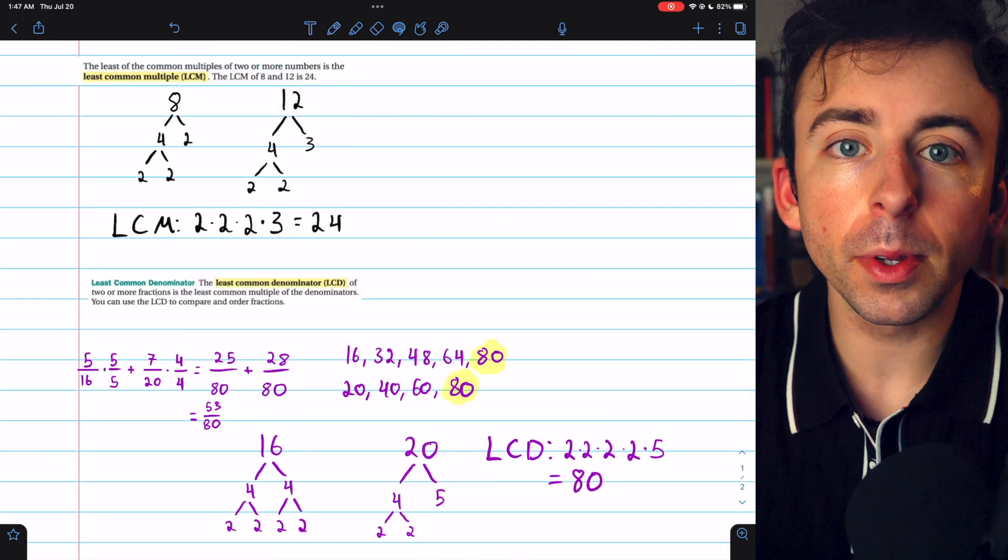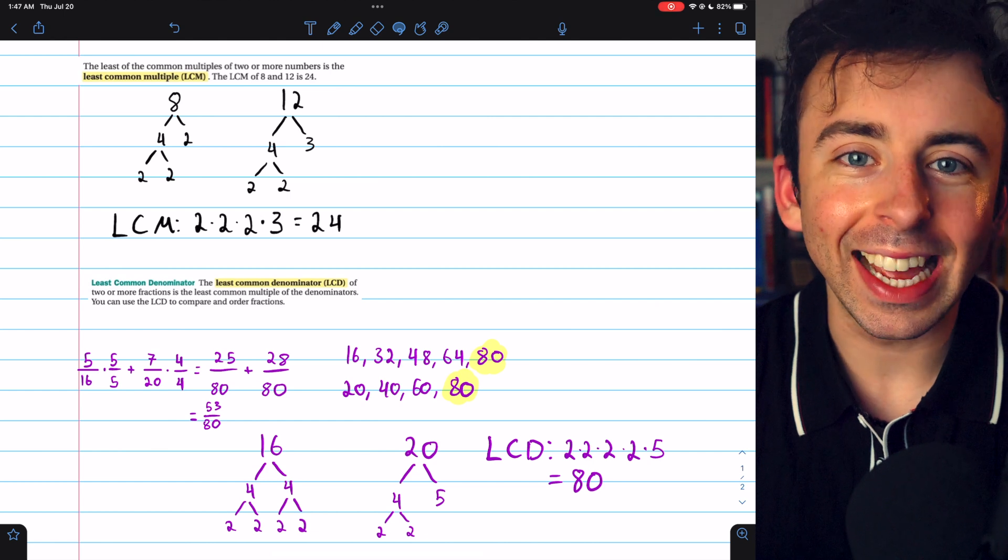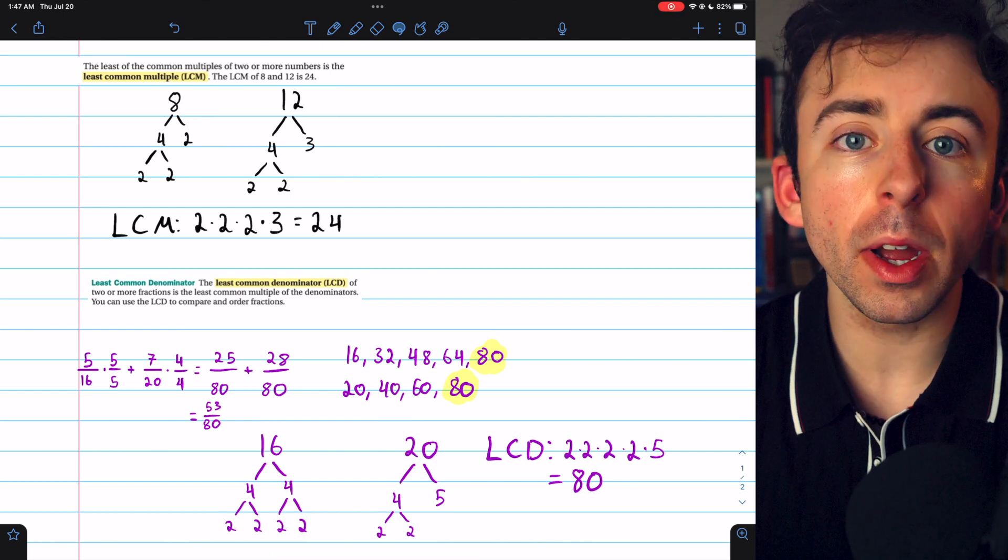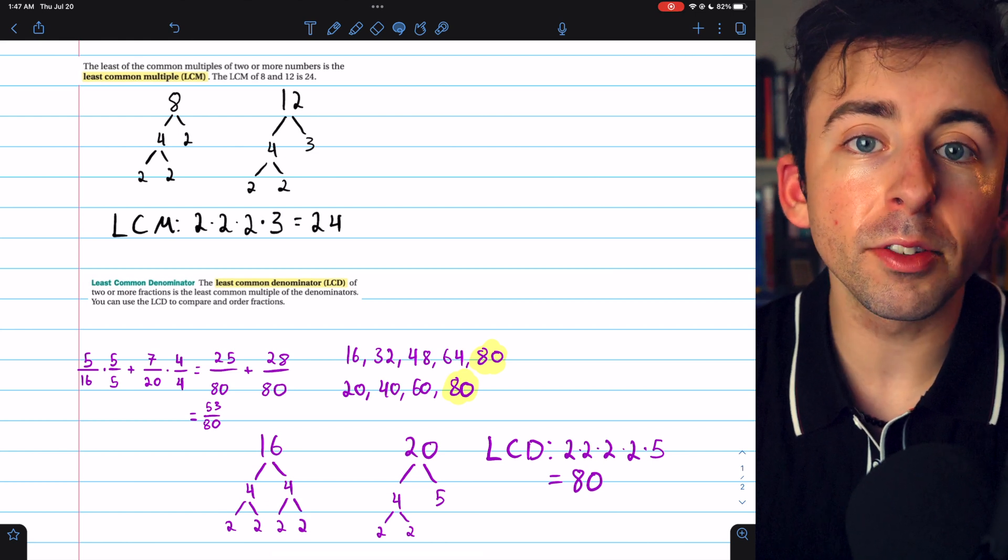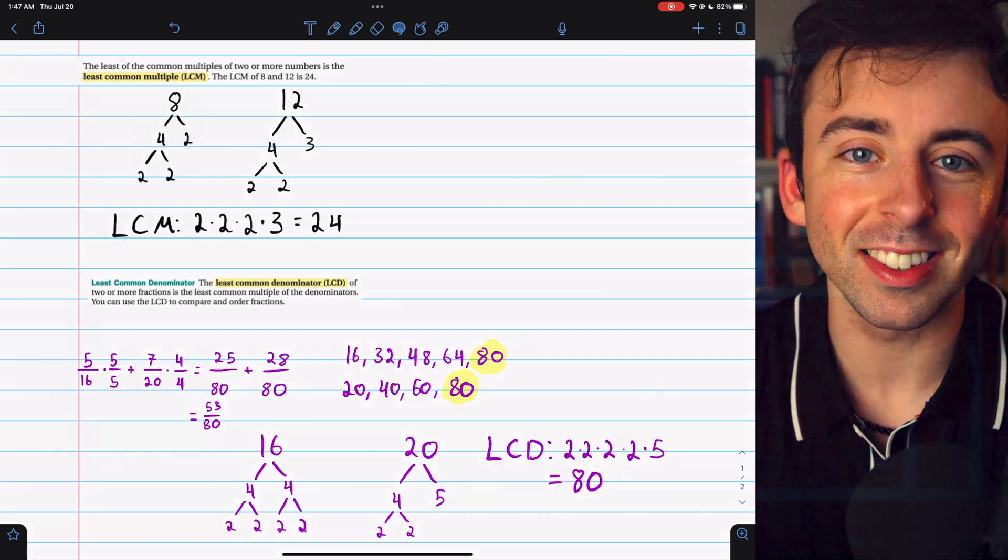That's what least common multiples and least common denominators are, as well as how to find them and how to use them. Let me know in the comments if you have any questions, and check out my pre-algebra course and pre-algebra exercises playlists in the description for more. I'll also leave a link in the description to a lesson where we practice a bunch more examples of this stuff.